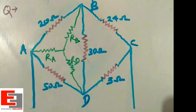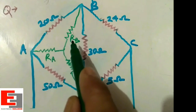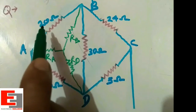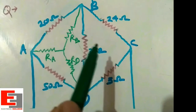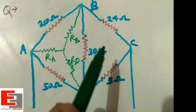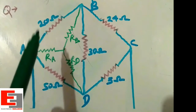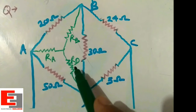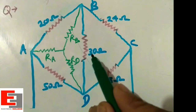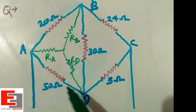We have to calculate the values of RA, RB, and RD. The formula to remember is: product of two adjacent arms divided by the sum of all three arms of the delta. While calculating RB, the two adjacent arms are 20 ohm and 30 ohm, so RB = 20 × 30 divided by the sum of all three resistances. Again, RD = 50 × 30 divided by the sum of all three resistances of the delta.